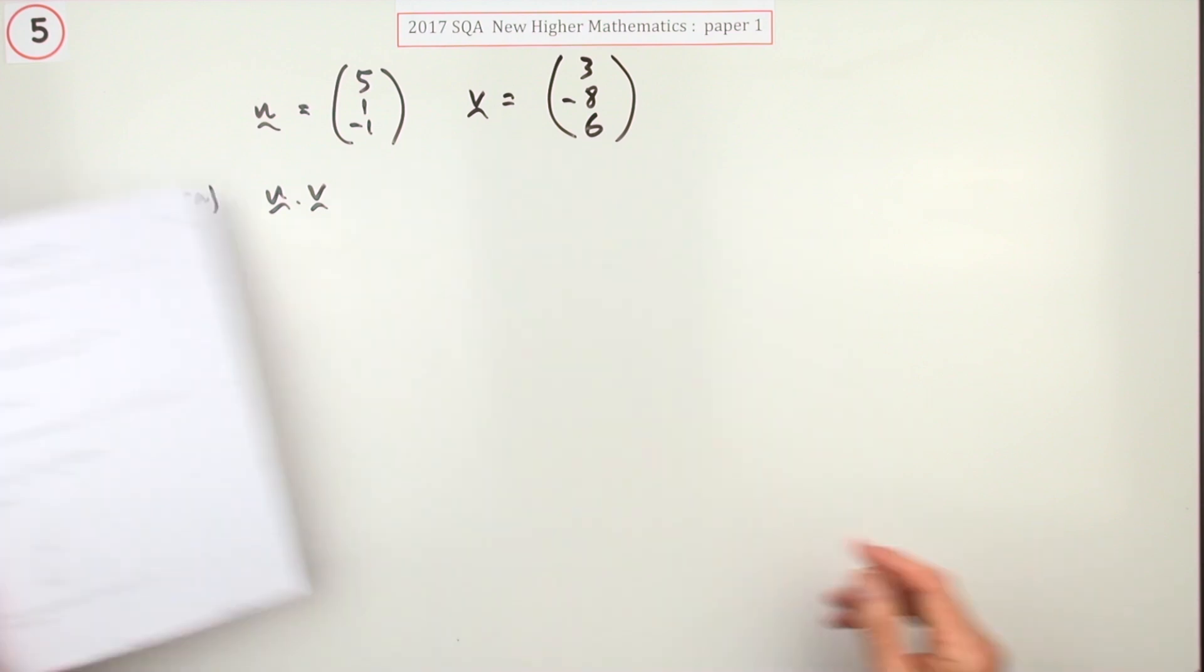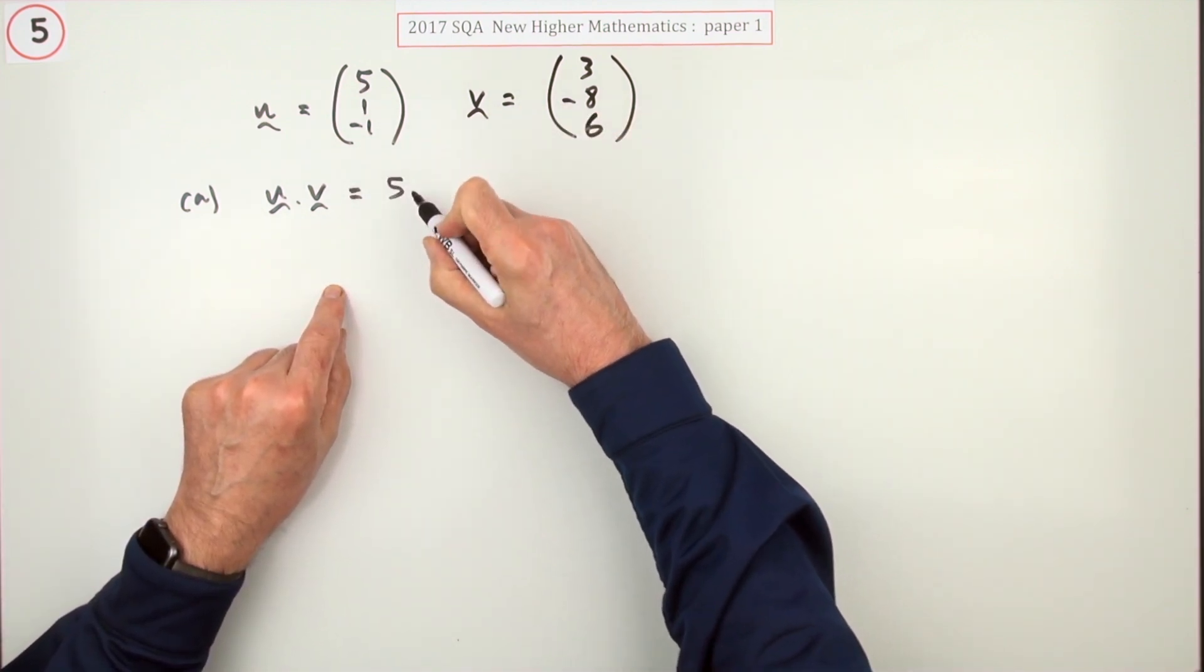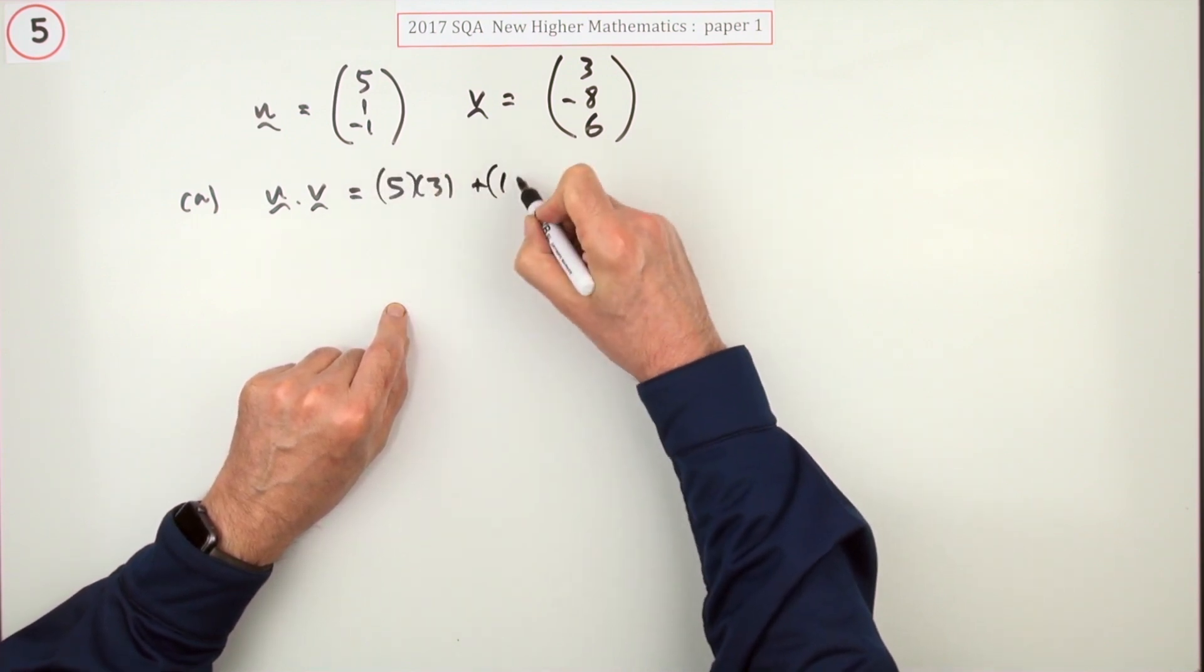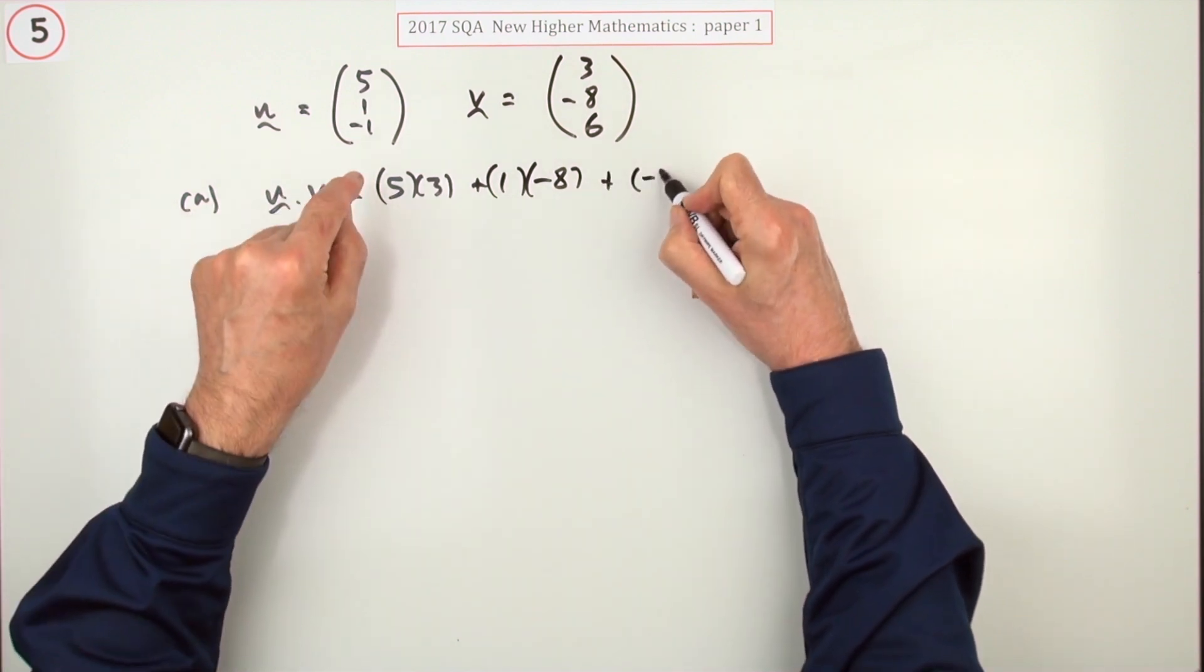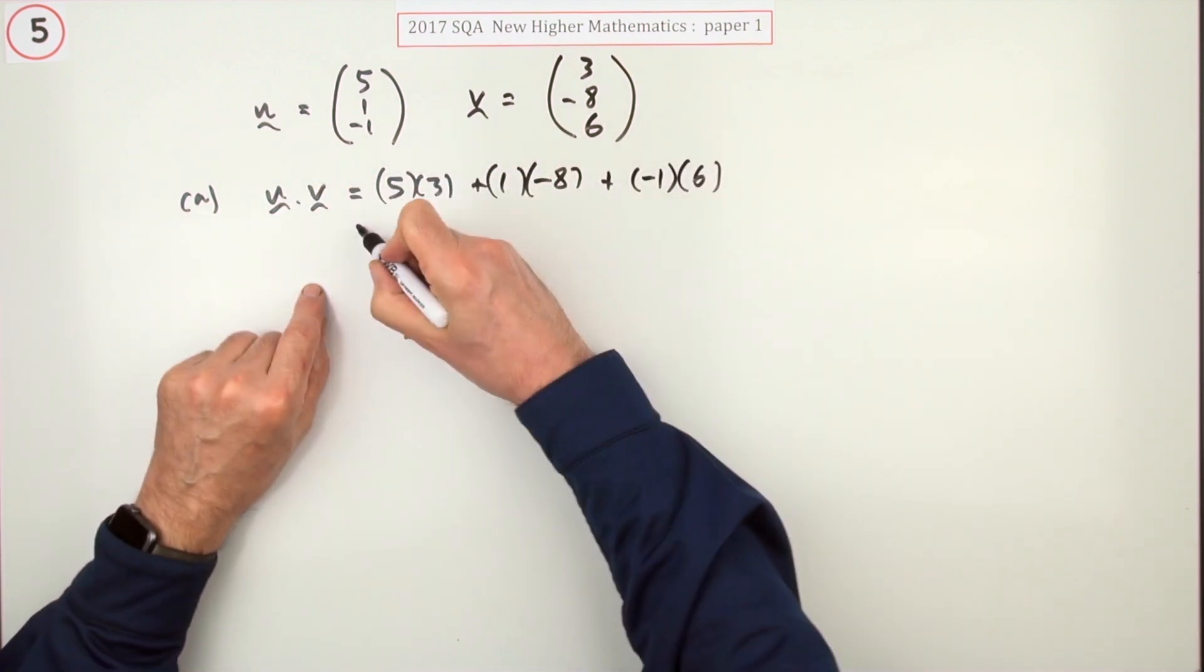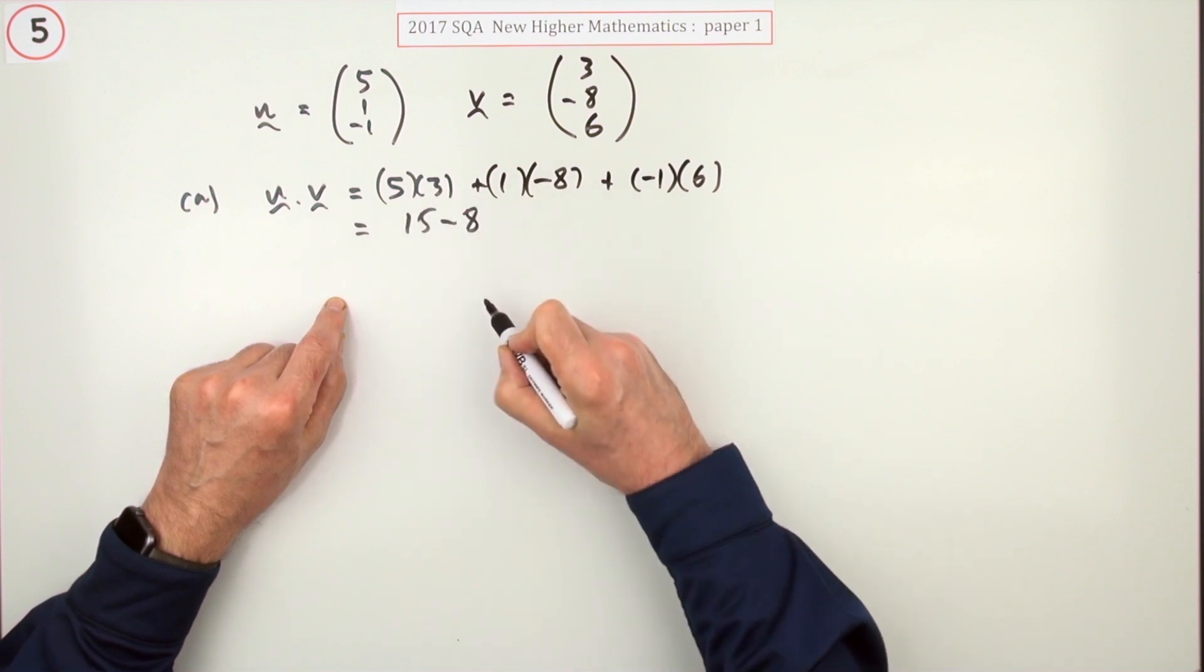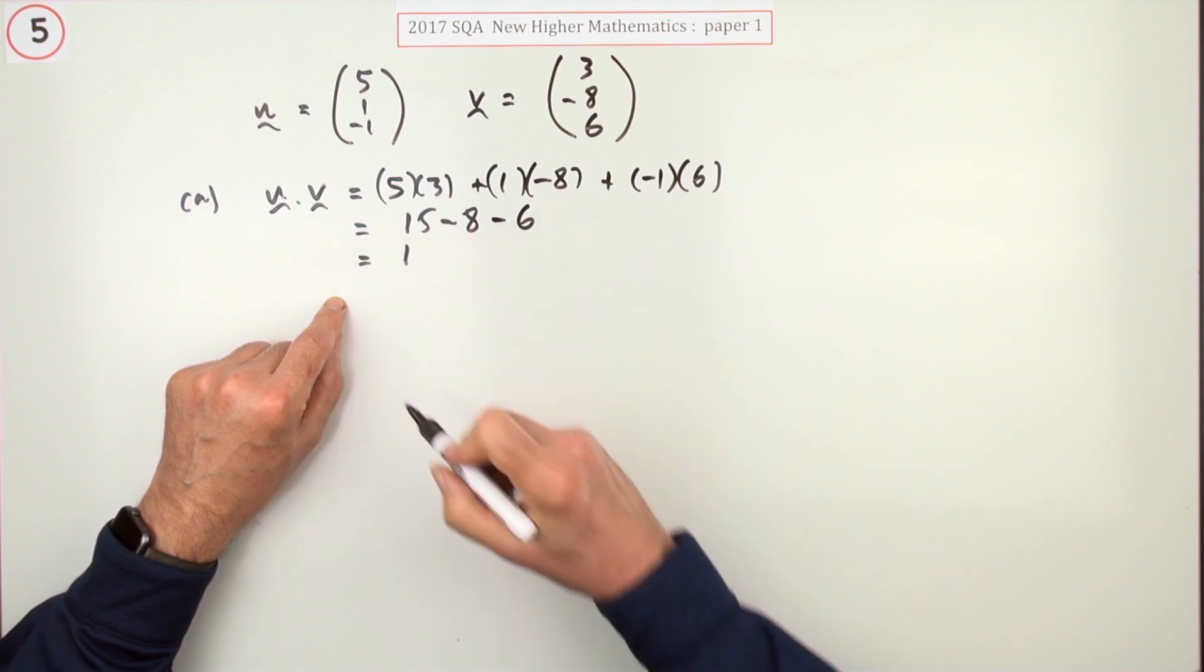It's only one mark, so just have to go through the multiplications. It's five times the three, then one times the negative eight for the y components, and add on negative one times the six for the z components. So five threes are 15 minus the eight minus the six takes the answer down to just one.